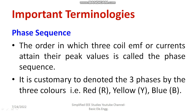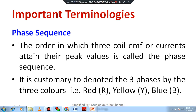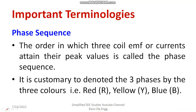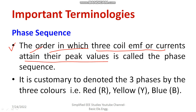Let me discuss about phase sequence. What do you mean by phase sequence? The phase sequence can be defined as the order in which the three coils or currents attain their peak values. This is known as phase sequence. You will study the generation of three-phase AC voltage — you have to rotate the three-phase coil at an angular frequency of omega.